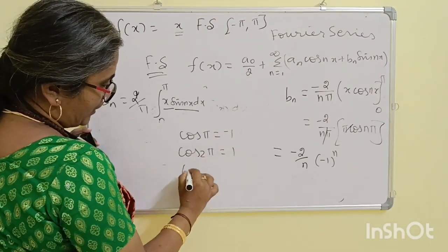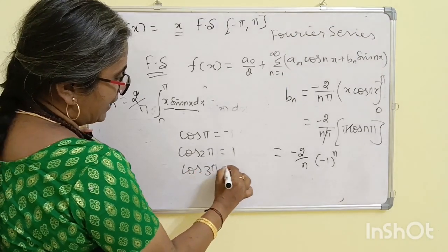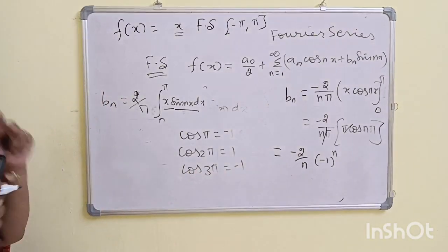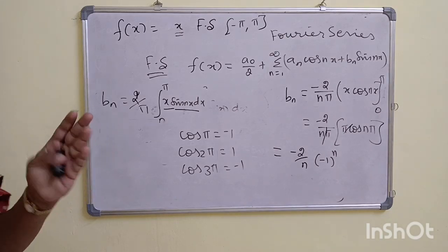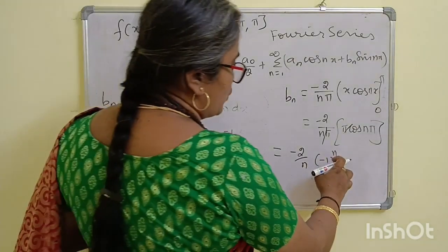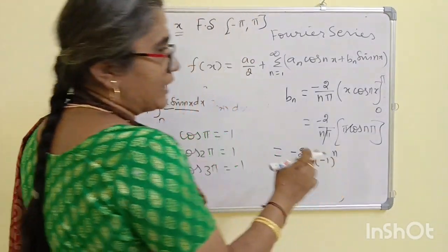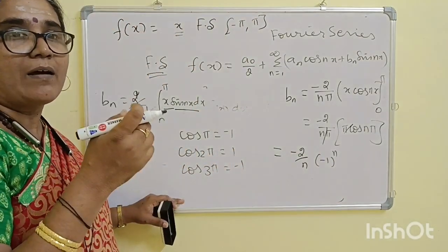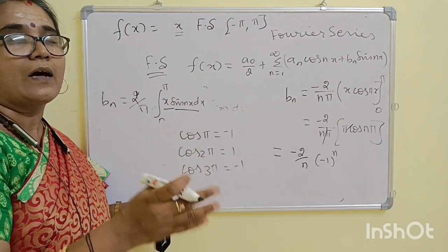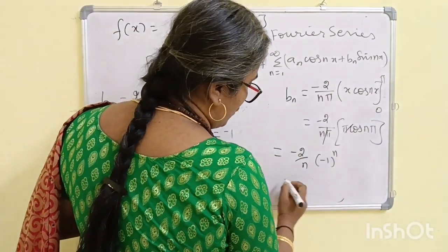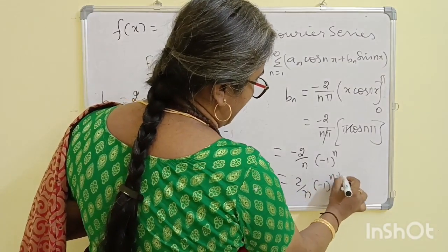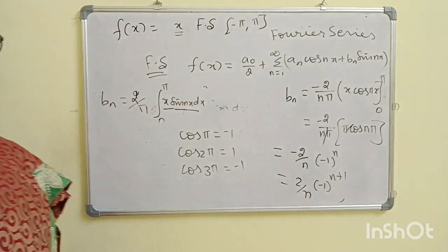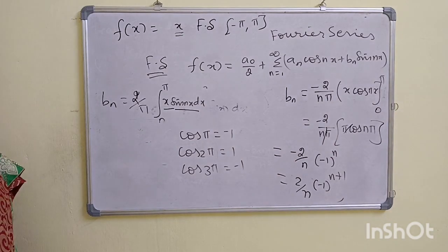We know that cos(2π) = 1, cos(3π) = -1. When n is odd, cos(nπ) = -1; when n is even, cos(nπ) = +1. We know that cos(nπ) = (-1)^n. When n is odd, (-1)^n = -1; when n is even, (-1)^n = +1. So Bn = (2/n)·(-1)^(n+1).